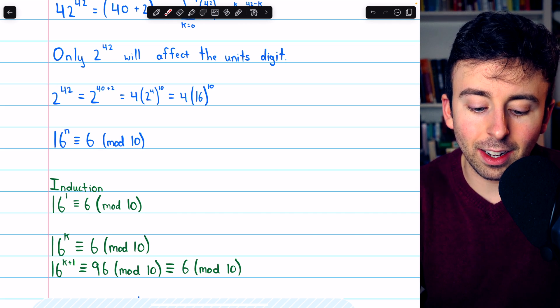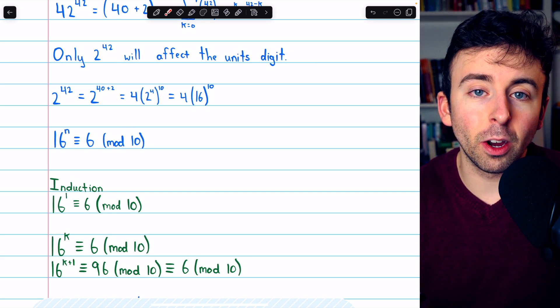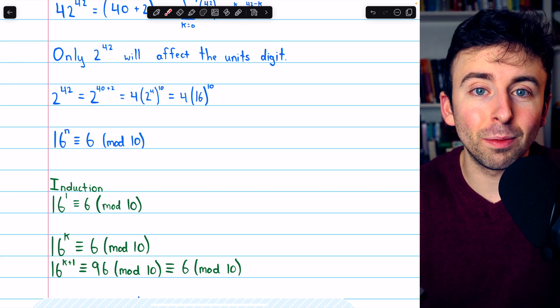And thus, 16 to a positive integer power will always be congruent to 6 mod 10. So, its unit's digit will always be 6.